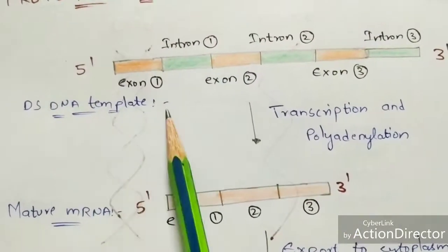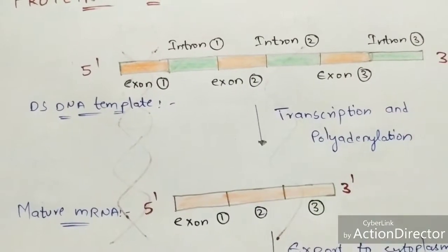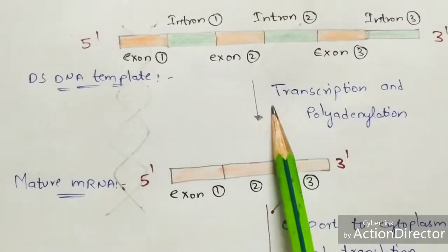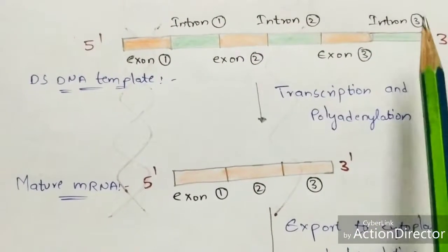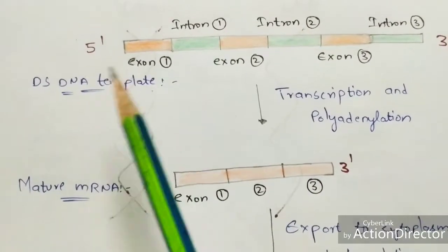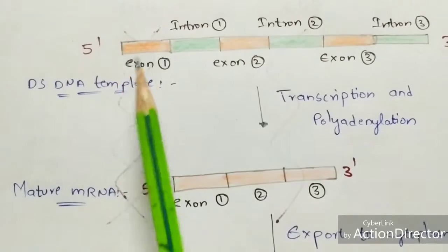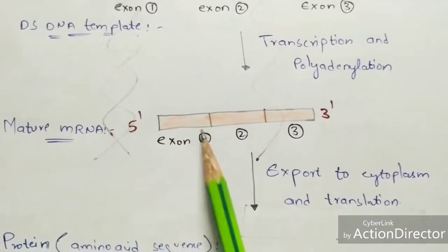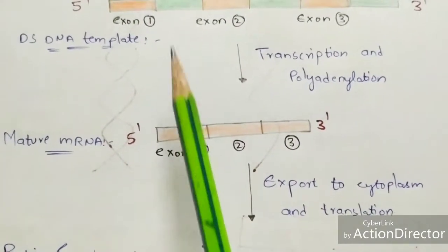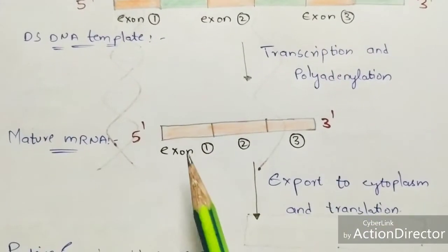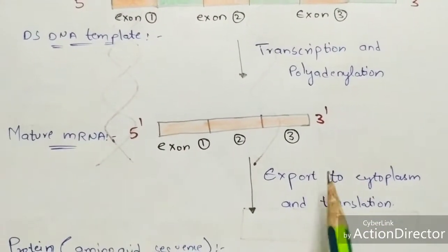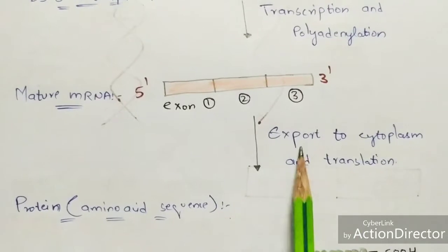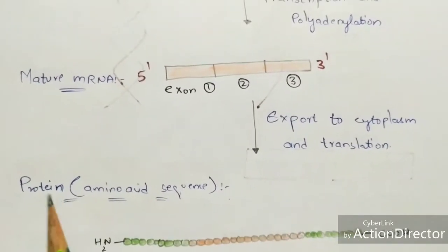The double-stranded DNA template undergoes transcription and polyadenylation, forming mature mRNA. During transcription, the introns (green) are removed and the remaining exons are joined together to form mature mRNA, which consists of only exons. This mature mRNA is then exported to the cytoplasm and undergoes translation.